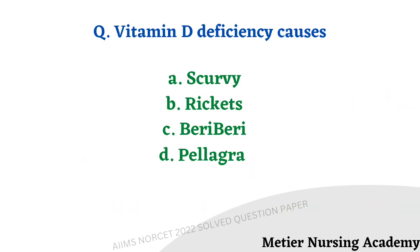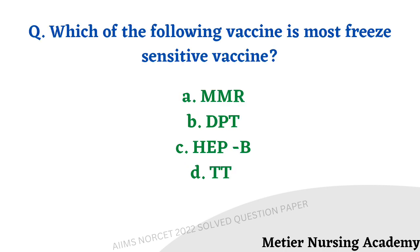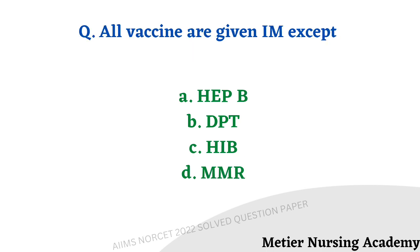Vitamin D deficiency causes: options are scurvy, rickets, beriberi, pellagra. The right answer is option B, rickets. Which of the following vaccine is the most freeze-sensitive? Options: MMR, DPT, Hepatitis B, TT. The right answer is option D, TT. All vaccines are given IM except: Hepatitis B, DPT, HiB, MMR. The right answer is option D, MMR — it is given subcutaneously.